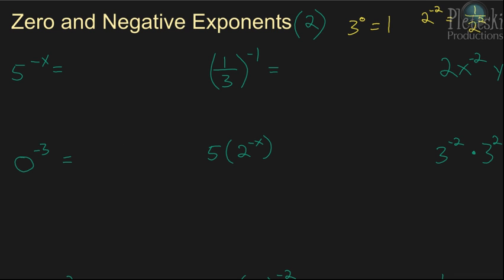So in this lesson, we'll just do a bunch of examples, and they're all different, so you'll probably want to pay attention for all of them. First: 5 to the negative x power. We know that a negative exponent means you rewrite it as a reciprocal. So, we're going to write this as 1 over 5 to the x, and that's all you have to do for that one.